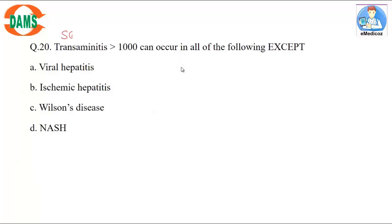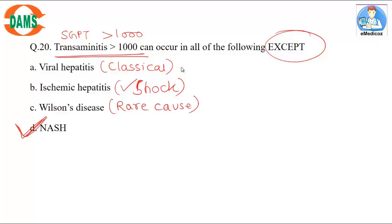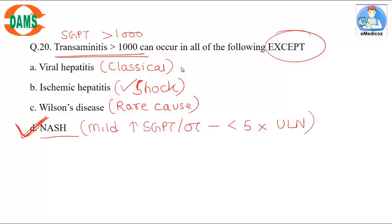Question 20: SGOT/SGPT ratio value more than 1000 is classical of viral hepatitis, also seen in shock liver. The difference is to distinguish Wilson's or NASH. Wilson's is a rare cause — true statement. The exception is NASH: non-alcoholic steatohepatitis causes only mild increase in SGOT/SGPT, usually less than 5 times the upper limit of normal. Correct answer is D.